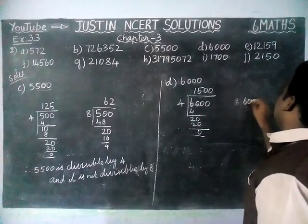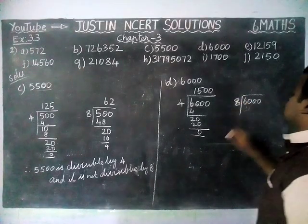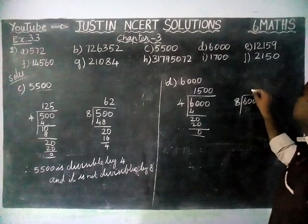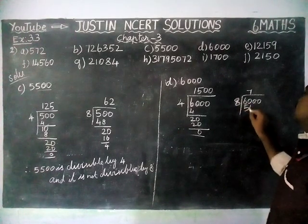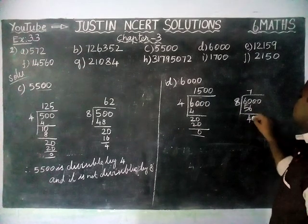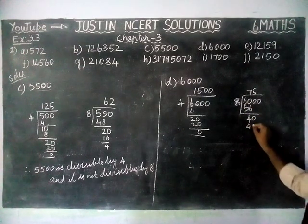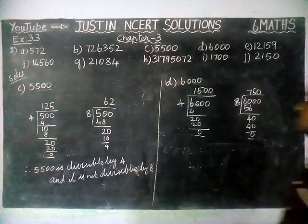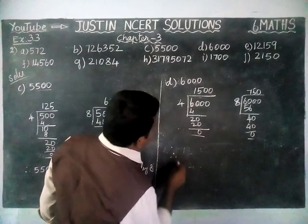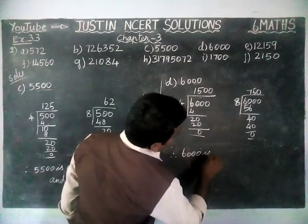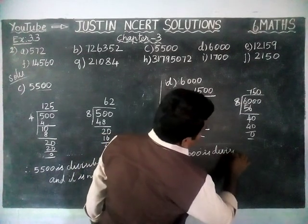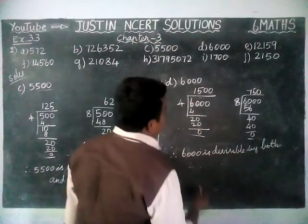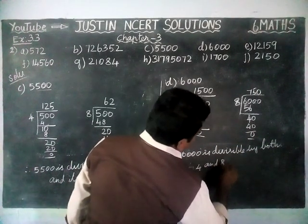Next, checking divisibility by 8. In 6, we cannot divide by 8, so we take 60. 8 sevens are 56, remaining 4, bringing down 0 gives 40. 8 fives are 40, remaining 0, and we have another 0. So 750 is the quotient. Therefore 6,000 is divisible by both 4 and 8.